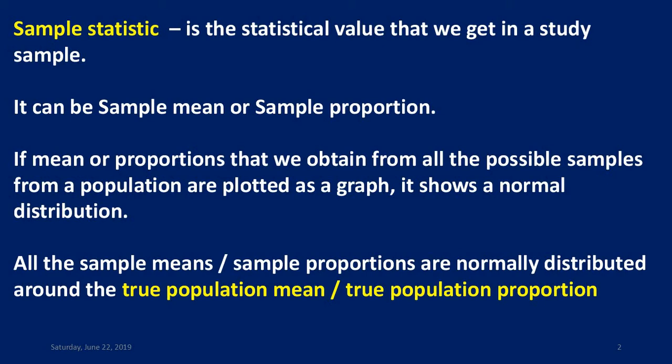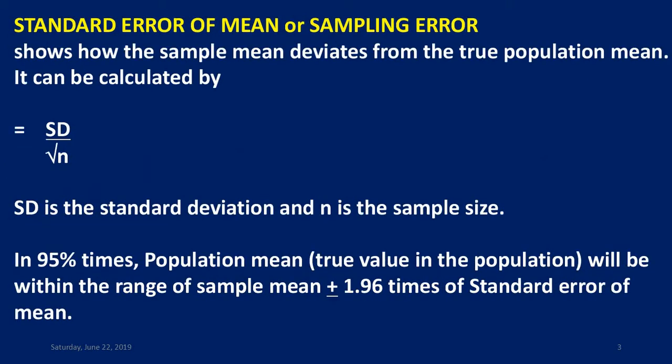True population mean is the mean obtained from all the possible samples from the population. Standard error of mean, or sampling error, shows how the sample mean deviates from the true population mean. It can be calculated by standard deviation divided by square root of n, where n is the sample size.